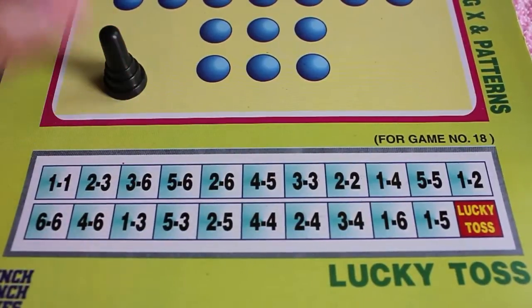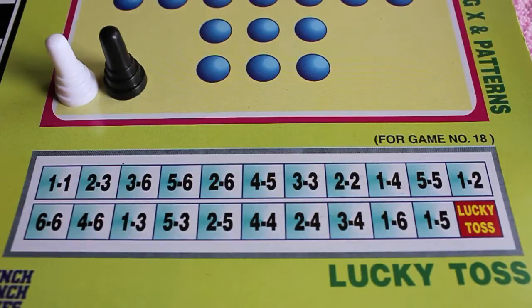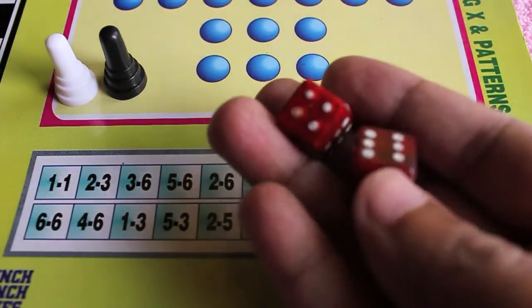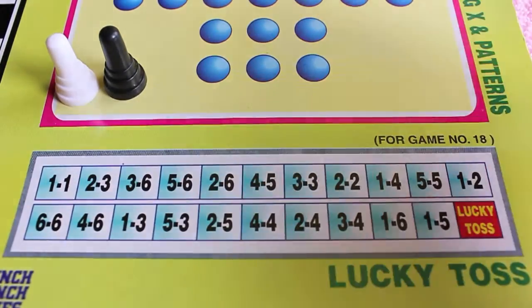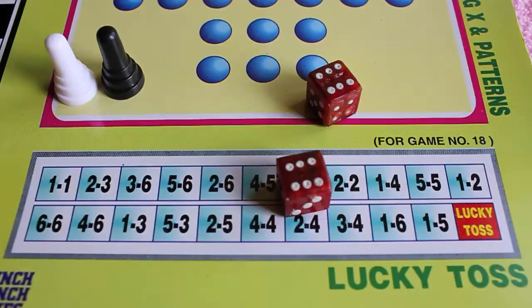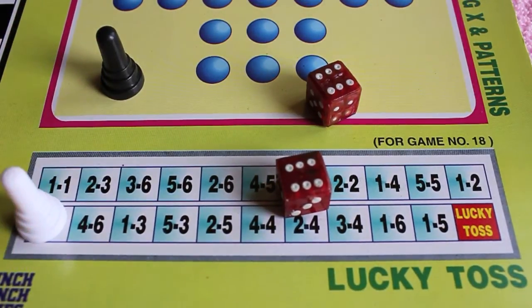Hello guys, let's take a look at Lucky Toss board game. It's played by two players with two dice. Every time you roll, if you have the number on the board, you have to put your pawn there.